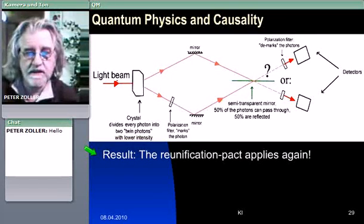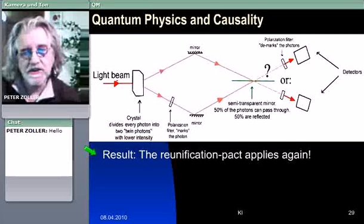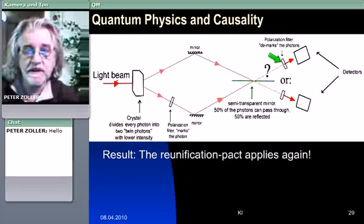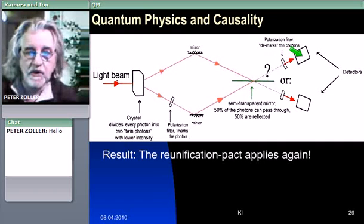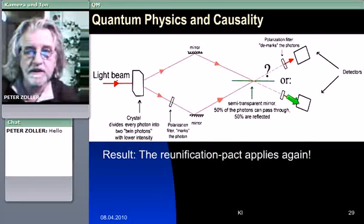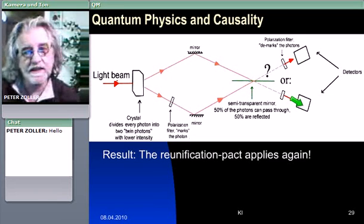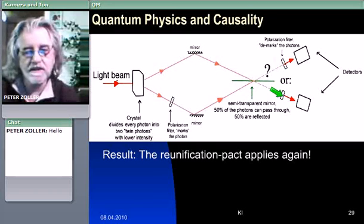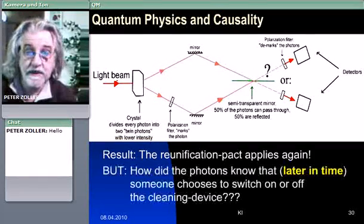This reunification pact, so the love between the two photons, this pact is taking place again. So this means now, if these washing machines are switched on, then you only will have the two possibilities that both photons are detected at the upper, or both photons together, reunited, are detected at the lower detector. But no longer the two other possibilities that one single twin photon is located at the upper and the lower device at the same time. So this cleaning process erases not only the information, but it re-enacts this pact that they reunite at this semi-transparent mirror. But the very strange thing about this is,